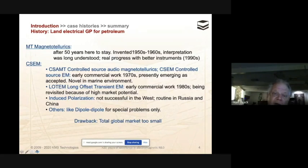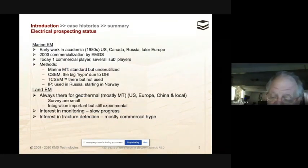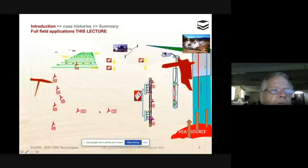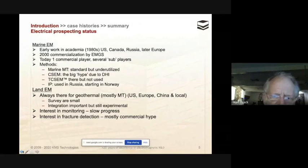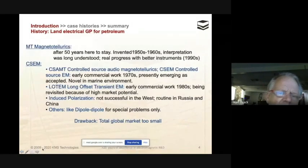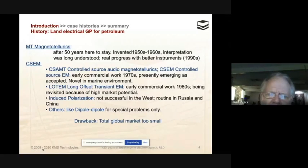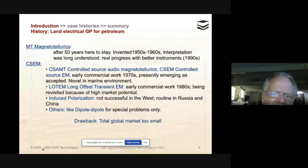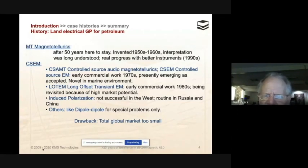There has been a lot of induced polarization done, in particular in Russia and China. They have not been successful in the West. What has been successful are dipole-dipole measurements, in particular in geothermal. The drawback for all of these techniques is that the global market is really, really small. Even when you are successful, it doesn't mean that it's being done again. The reason is that there is very little education in electromagnetics at the universities, which is one of the reasons why I volunteered to give this presentation.